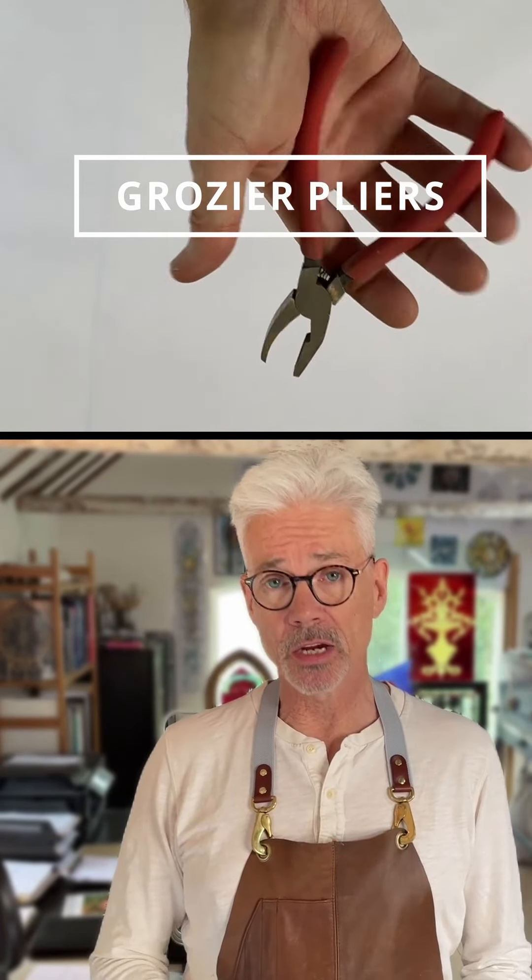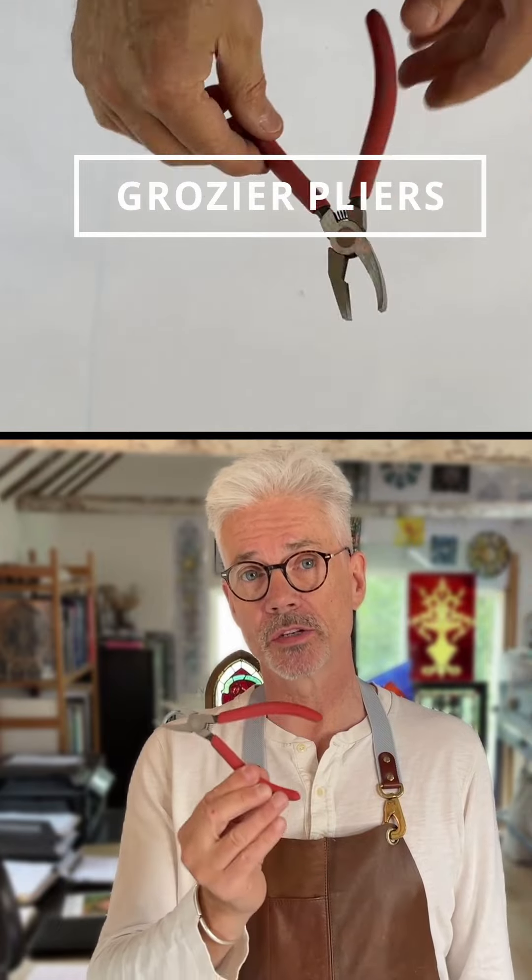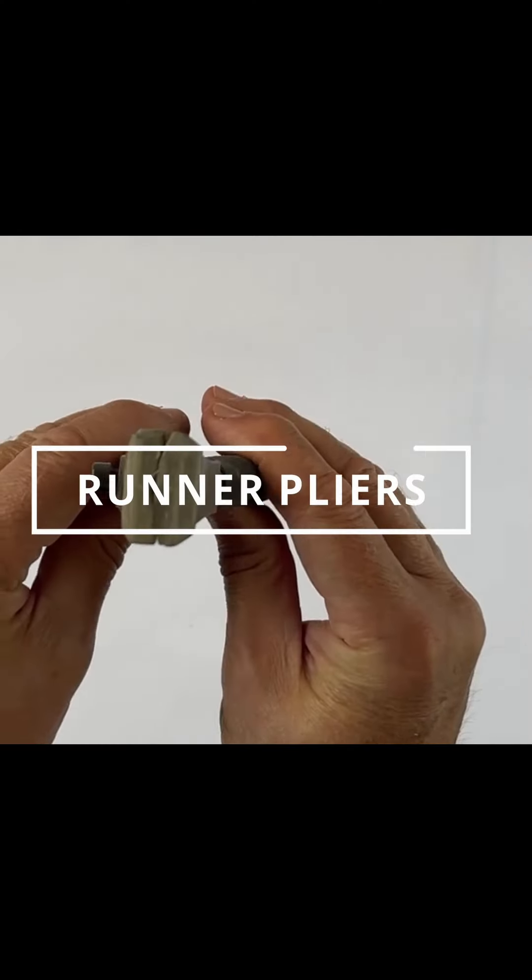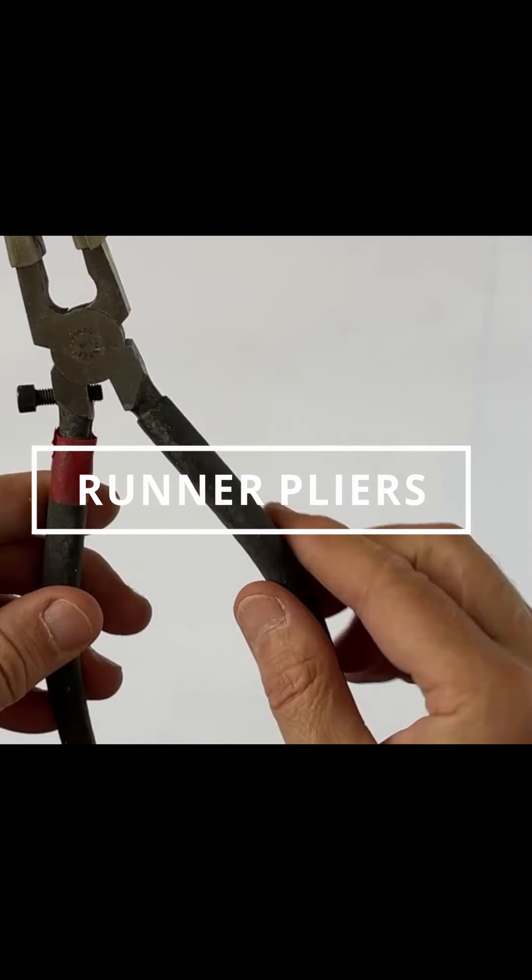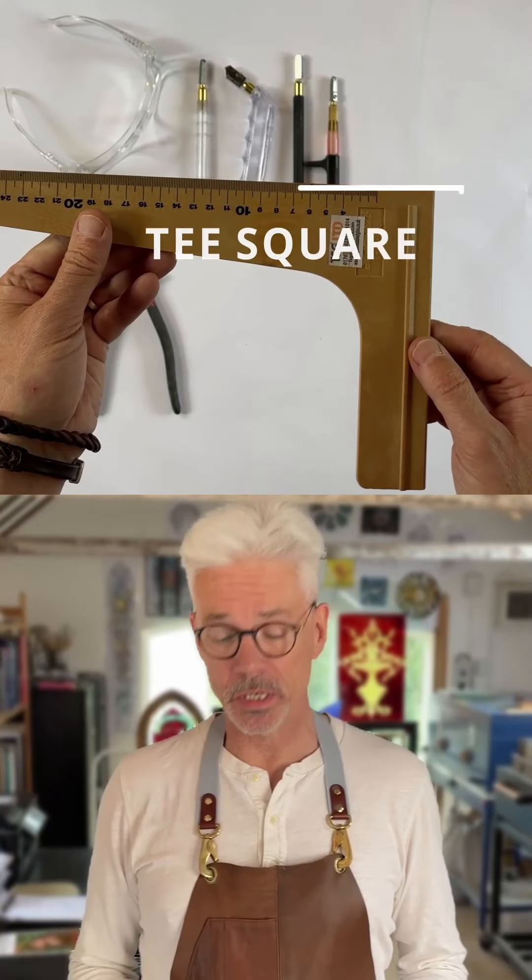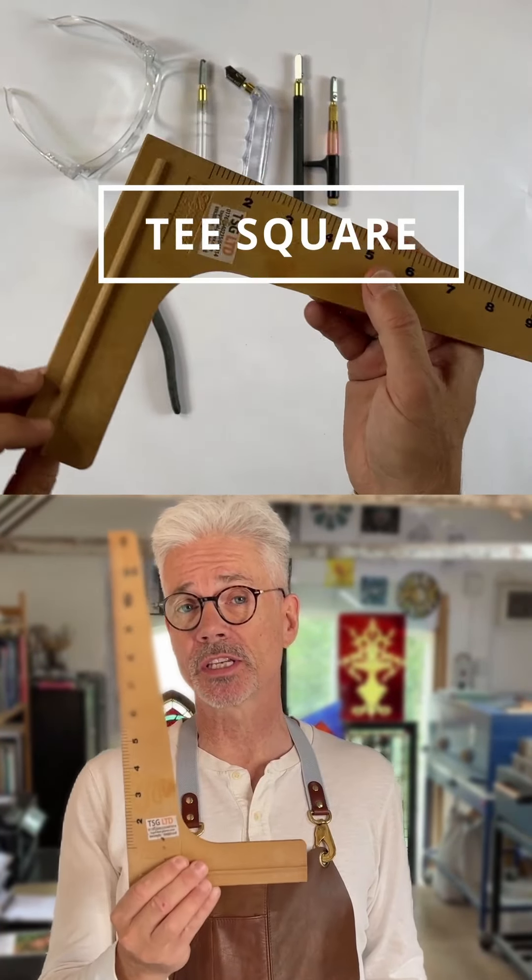You will also need to buy pliers. These are known as grozing pliers. Another handy device are these breaking pliers for breaking glass. You will need a t-square or a set square.